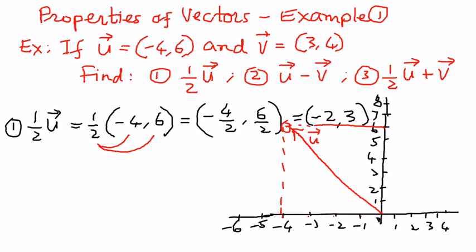Half of vector u is negative 2 comma 3. To represent it graphically, we go 2 units on the negative x-axis and 3 units on the positive y-axis. That point has coordinates negative 2 comma 3, and the line from the origin to that point is one-half of vector u. We can represent a vector and its scalar multiplication as shown here.